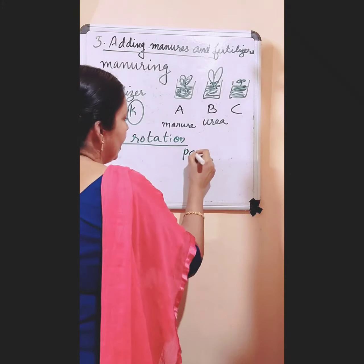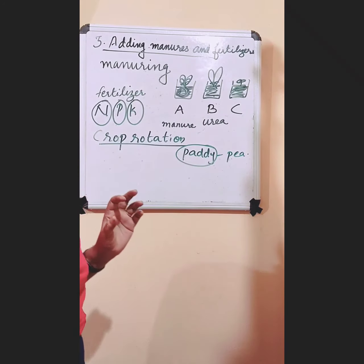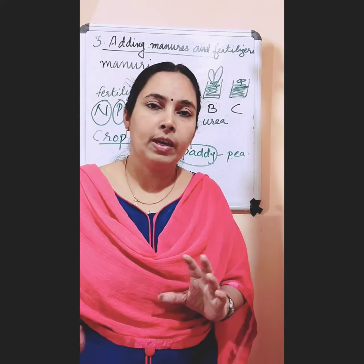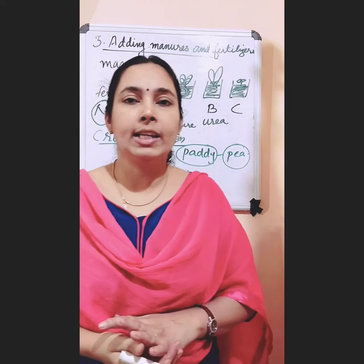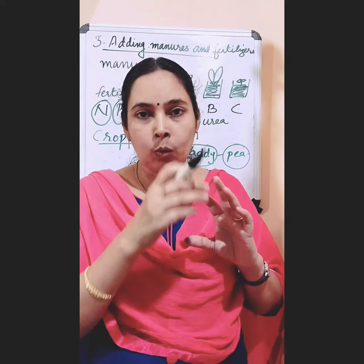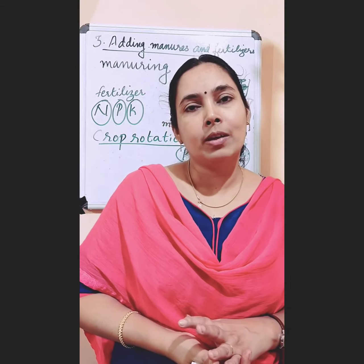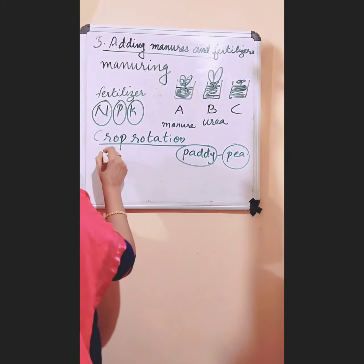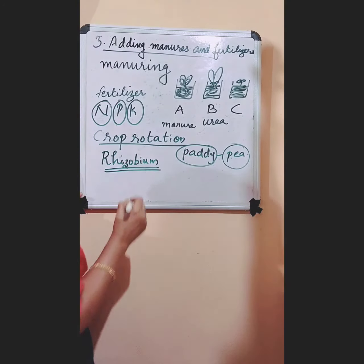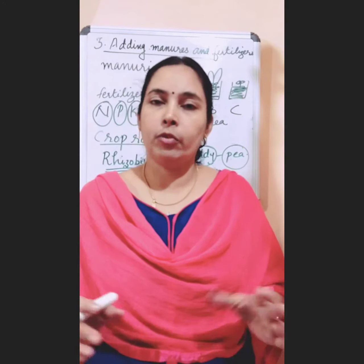Another example is paddy and pea plants. Paddy is a kharif crop, growing only during rainy season. So during rainy season we can grow paddy, and after harvesting we can plant pea plants. These leguminous plants have the ability — in their root nodules, some bacteria are living. Nitrogen-fixing bacteria are living there. The name of that bacteria is Rhizobium. So in the root nodules of leguminous plants, a bacteria called Rhizobium is living, and this bacteria has the ability to fix nitrogen. All plants need a lot of nitrogen for their better growth.